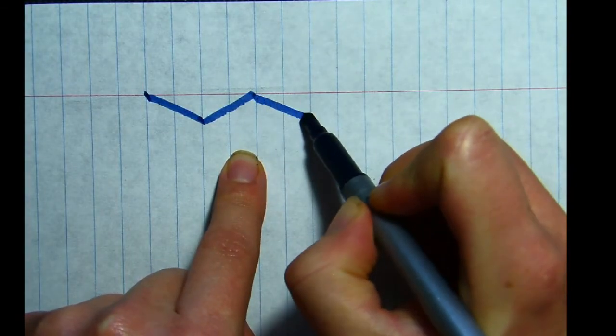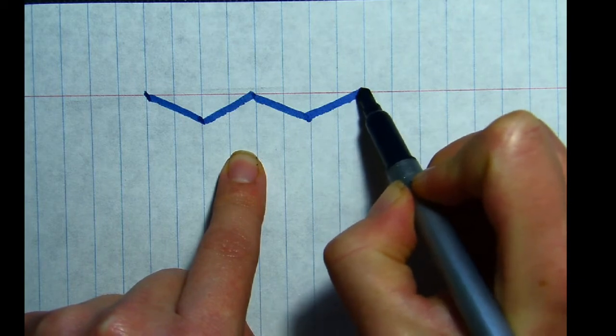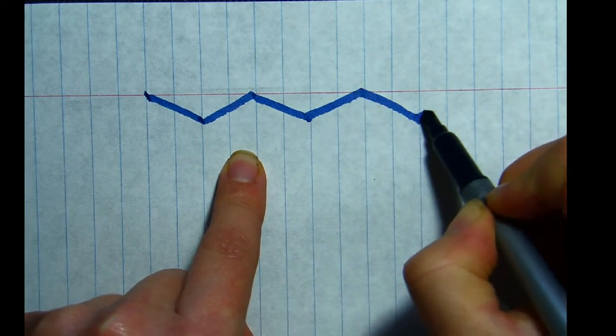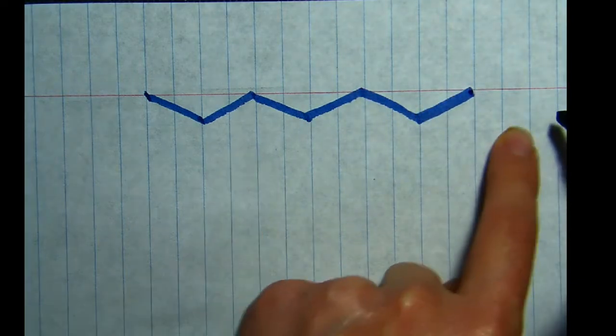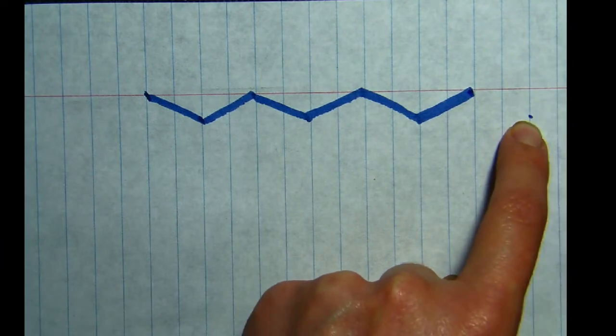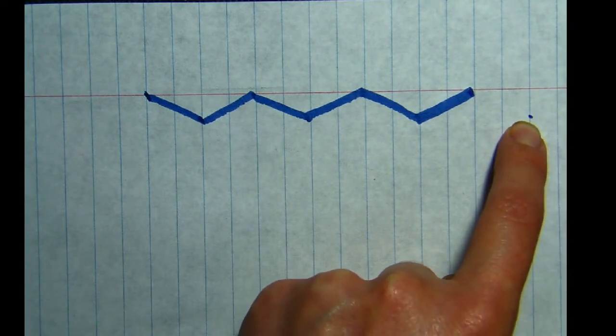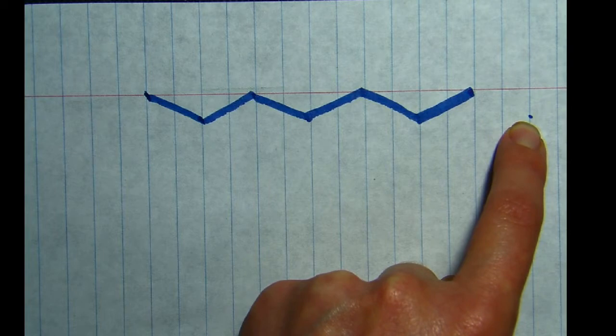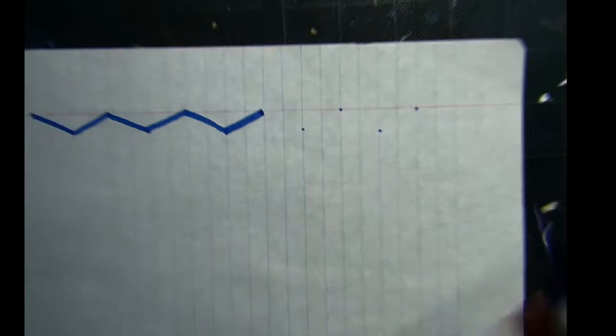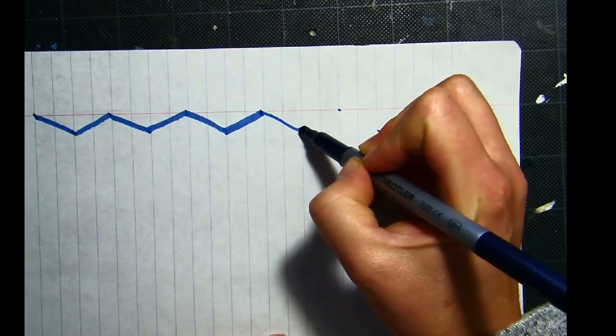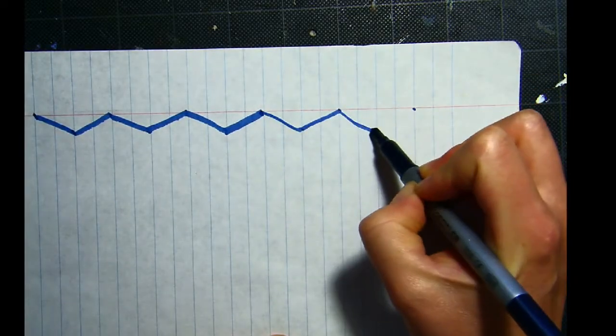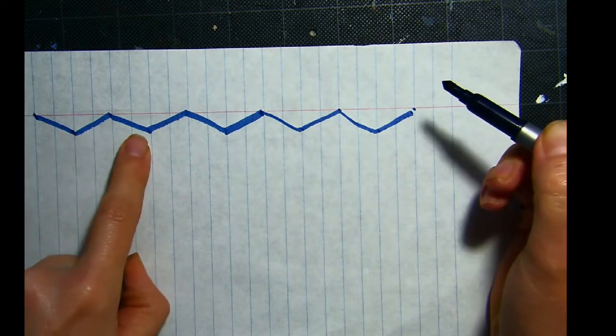And I'm going to go across the page making a zigzag that goes two spaces for each angle. Zig, zag, two spaces, two spaces. Even if you have to cheat a little bit and give yourself like a little dot so you can count the spaces ahead of time, it makes it easier to draw that way.